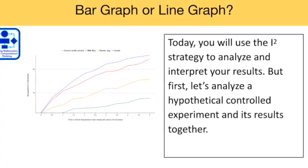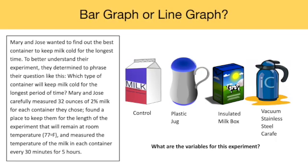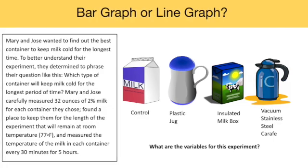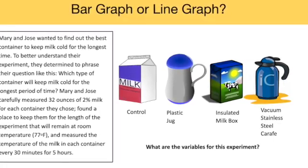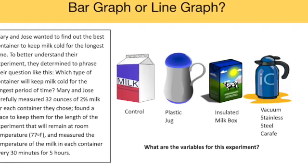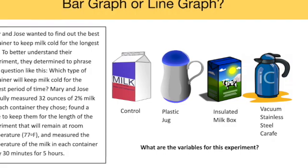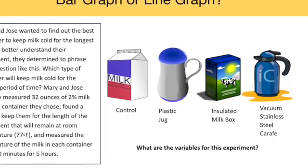Let's look at this in action using the example provided. In this experiment, Mary and Jose wanted to find out which container would keep a quantity of milk the coldest over a five-hour period if the milk is left out at room temperature of 77 degrees Fahrenheit. They used four different containers: the original carton the milk came in, which is their control group, a plastic jug, an insulated milk box, and a vacuum stainless steel carafe.